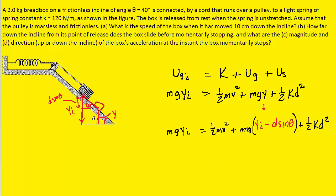We can distribute the mg into both terms of the parentheses. If we look carefully, the term mg times yi appears on both the left and right-hand side of the equation. If we subtract both sides by that term, it's going to cancel away.